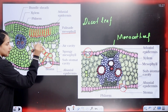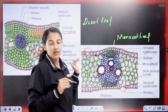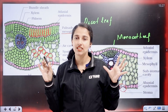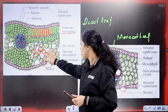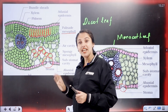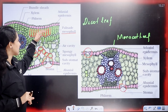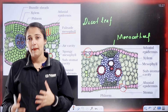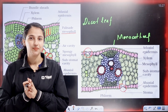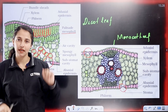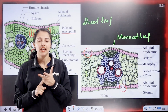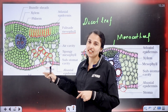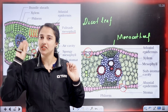The oval or irregularly shaped cells are very spacious with intercellular spaces — these form the spongy mesophyll tissue, placed below the palisade parenchyma. So in the dicot leaf, mesophyll is differentiated into palisade mesophyll tissue and spongy mesophyll tissue. In the monocot leaf, there is no such differentiation.